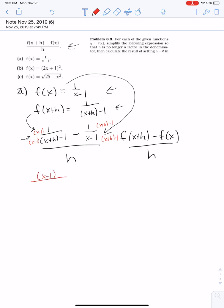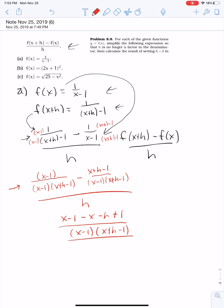So then I have x minus 1 over x minus 1 times x plus h minus 1, minus x plus h minus 1 over x minus 1 times x plus h minus 1, all divided by h. So I can simplify in the numerator here. I have x minus 1 minus x minus h plus 1, all over x minus 1 times x plus h minus 1, all over h.